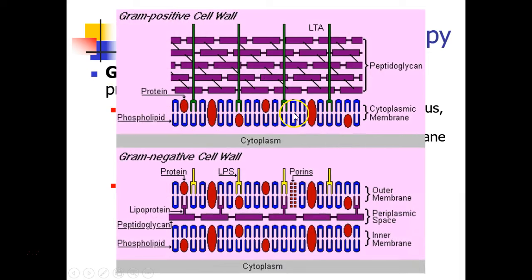Here's a diagram that demonstrates the difference between Gram positive and Gram negative cell walls. Gram positive bacteria have a single phospholipid membrane, the cytoplasmic membrane, and a very thick peptidoglycan layer that forms the Gram positive cell wall. Whereas Gram negative bacteria have a phospholipid bilayer forming an inner membrane, another phospholipid membrane forming the outer membrane, and a very thin cell wall made of peptidoglycan in the periplasmic space.